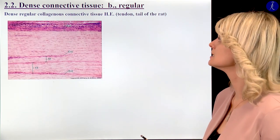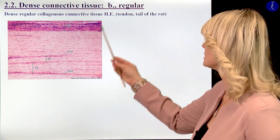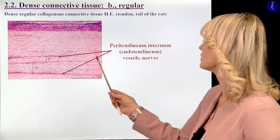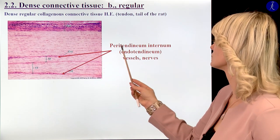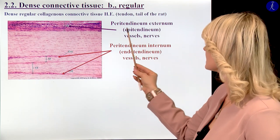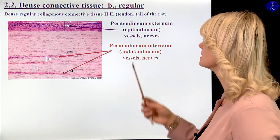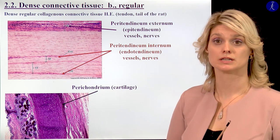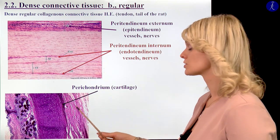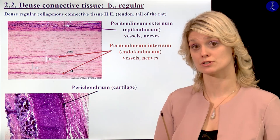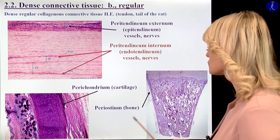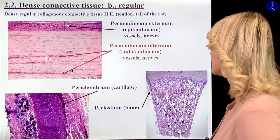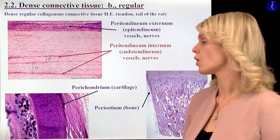Where do we find dense regular collagenous connective tissue? Within the tendon we can divide it into two main parts: the endotendineum, where we have the vessels and nerves (also called peritendineum internum), and the outermost part called epitendineum, which also has vessels and nerves. Dense regular collagenous connective tissue also surrounds cartilages — it is called perichondrium — which has an important function in the growth and regeneration of cartilages. And also we can find a dense collagenous connective tissue sheet around bones called periosteum, which is important in bone growth.